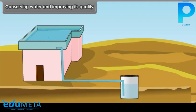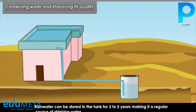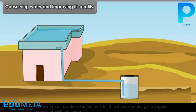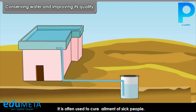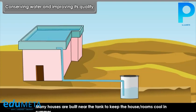Do you know? Rain water can be stored in a tank for three to five years, making it a regular source of drinking water. Rain water, also called 'polar pani', is the purest form of natural water. It is often used to cure ailments of sick people. Many houses are built near the tank to keep the house or rooms cool in summer.